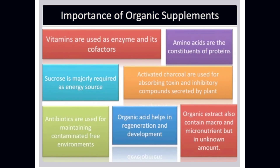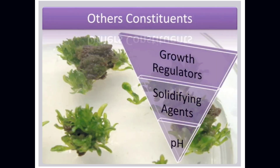Importance of Organic Supplements: Vitamins are used as enzymes and co-factors. Amino acids are the constituents of proteins. Sucrose is majorly required as an energy source. Activated charcoal is used for absorbing toxins and inhibitory compounds triggered by plants. Antibiotics are used for maintaining contamination-free environments. Organic acid helps in regeneration and development. Organic extracts also contain macro and micronutrients but in unknown amounts.